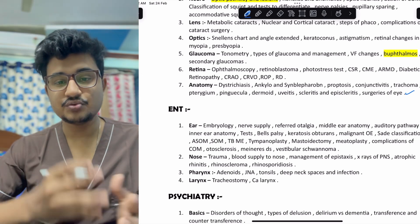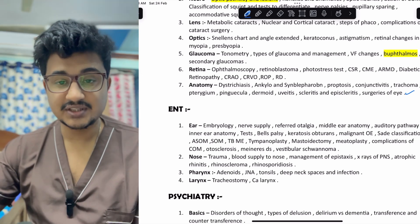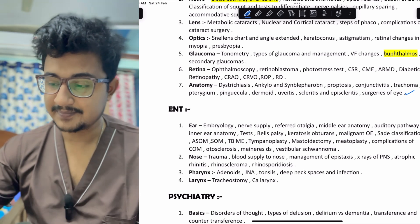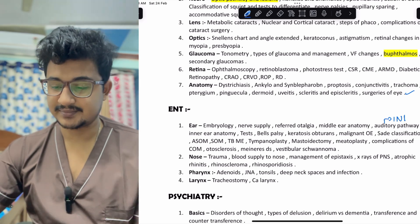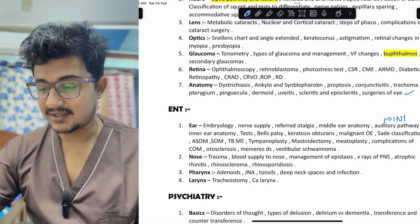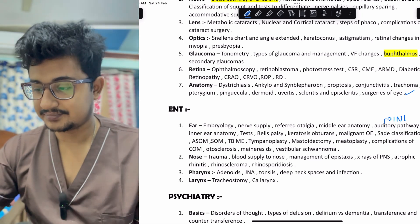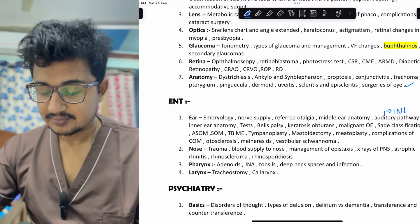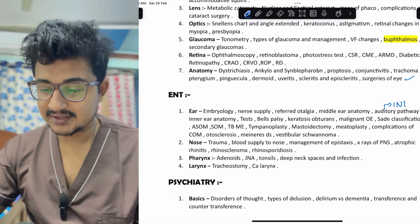Now coming to ENT. In ear, the embryology, nerve supply, referred otalgia, middle ear anatomy, and the auditory pathway are important — the auditory pathway especially for the INI CET perspective. Also important are inner ear anatomy, tuning fork tests, keratosis obturans — which was asked in NEET 2018 — malignant otitis externa, Sadé classification, ASOM, TB middle ear, and many other topics.